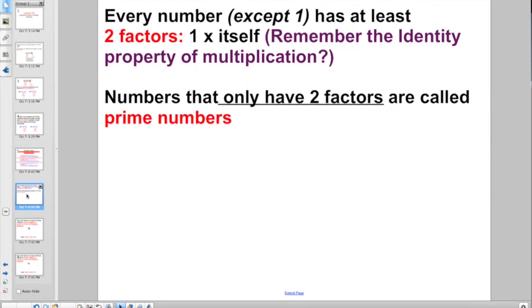One last piece of explaining before we see how it all ties together. Last thing you need to know is that every number, except for the number 1, has at least 2 factors: 1 times itself. Because do you remember the identity property of multiplication?